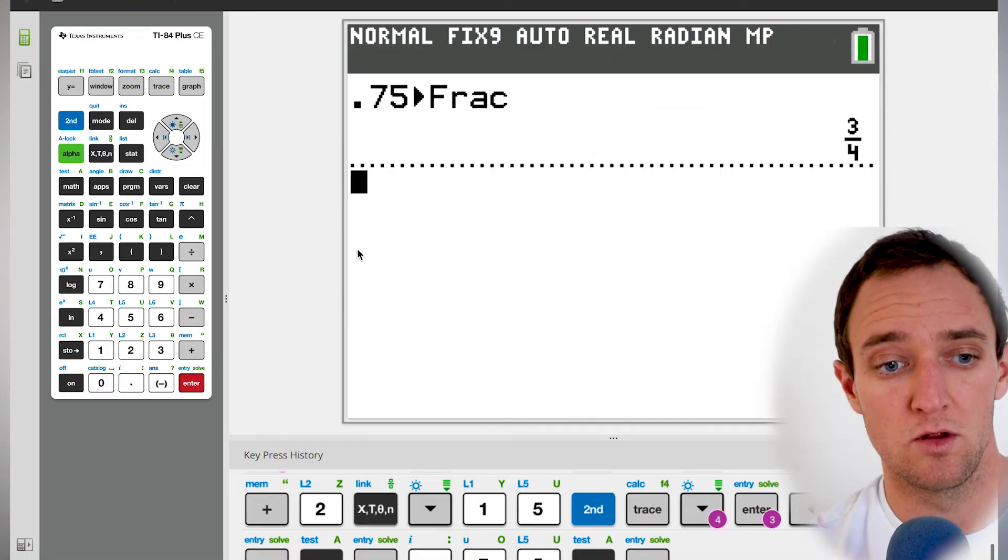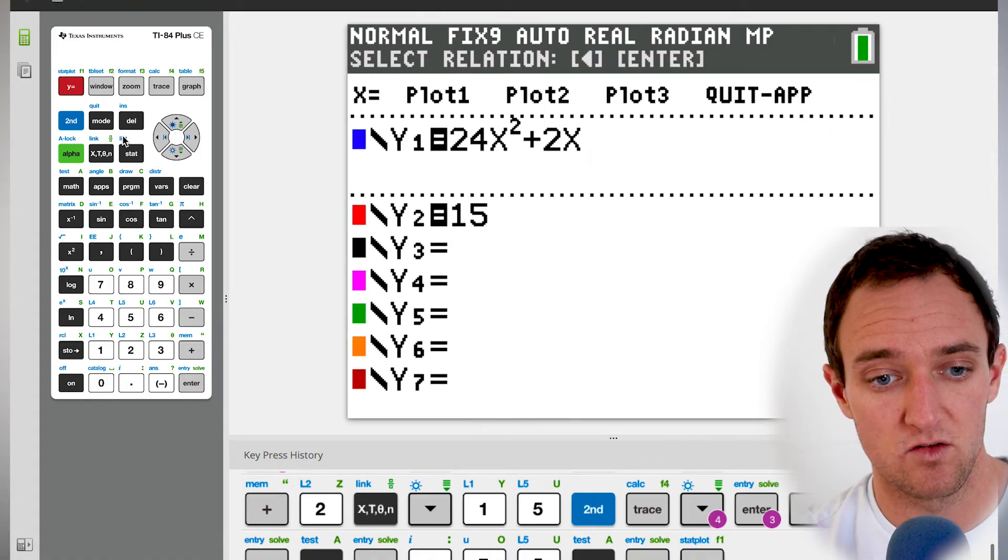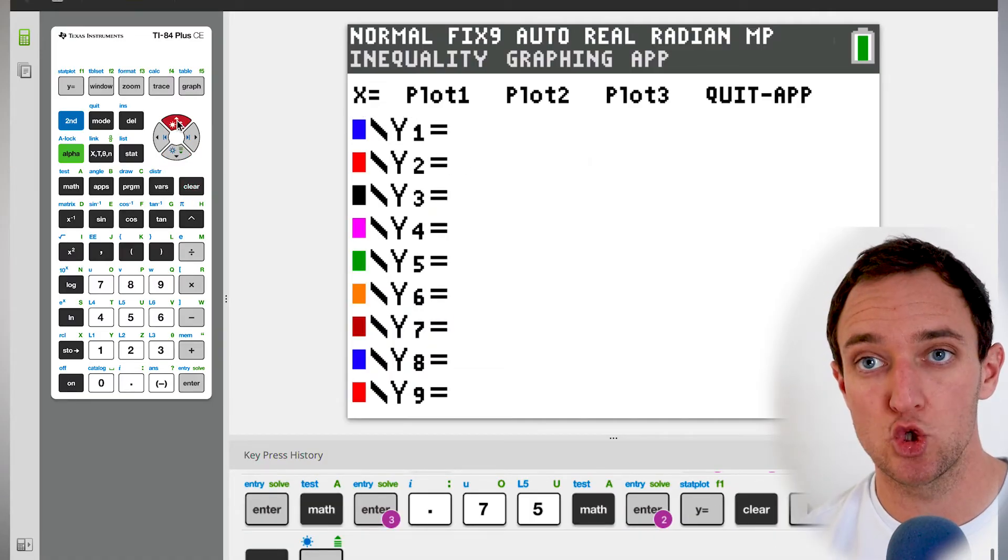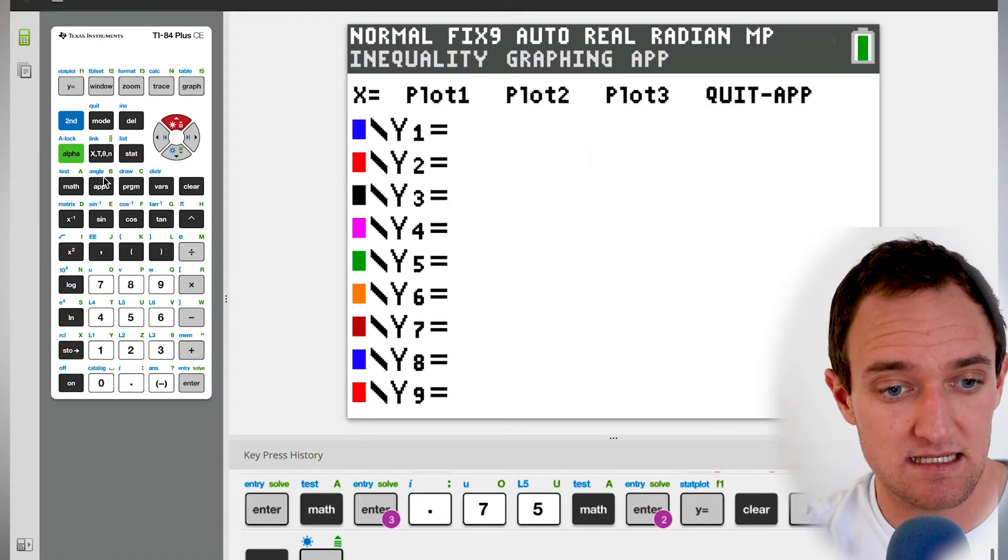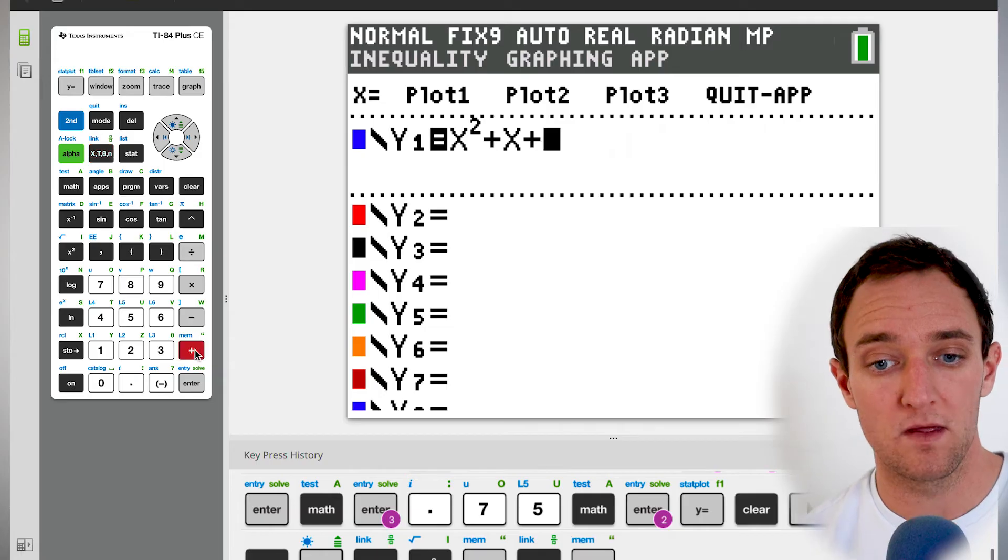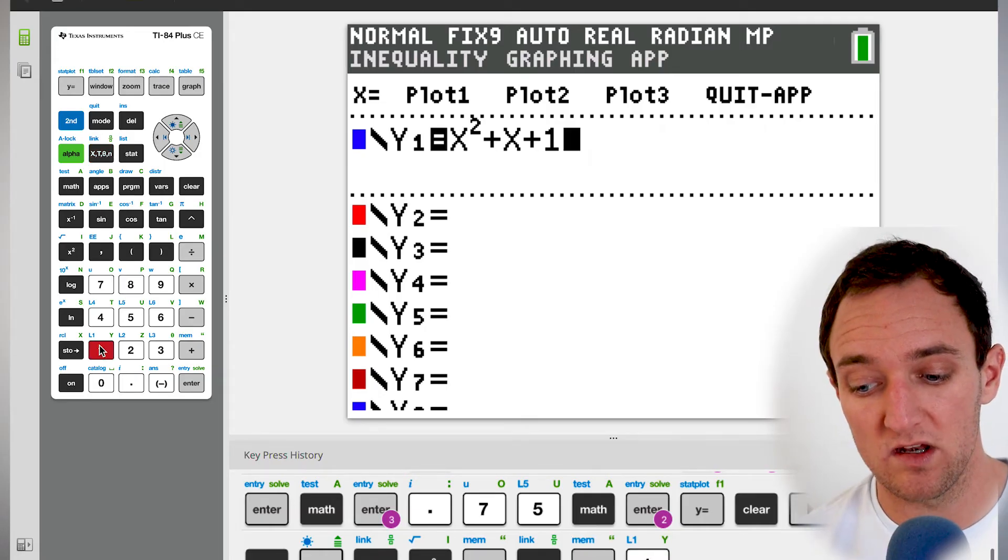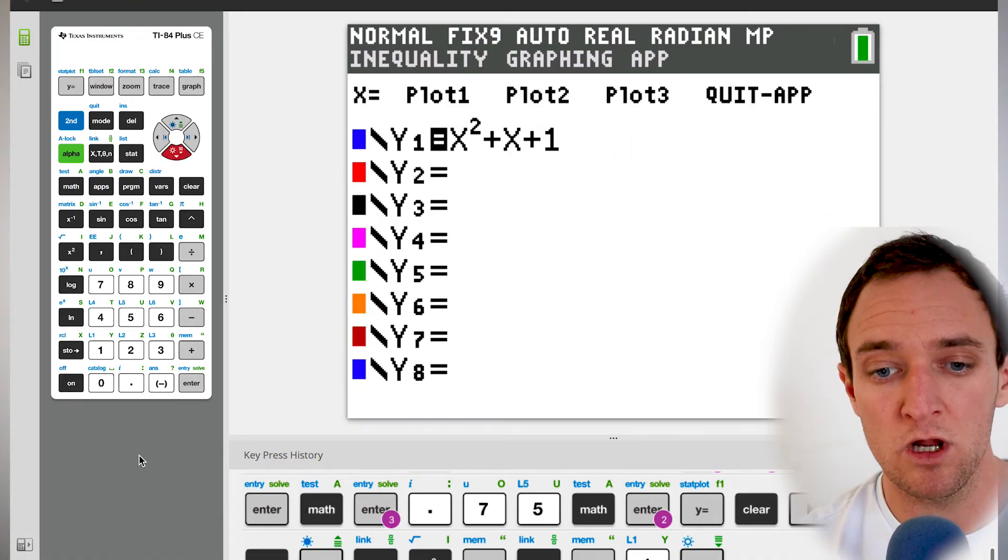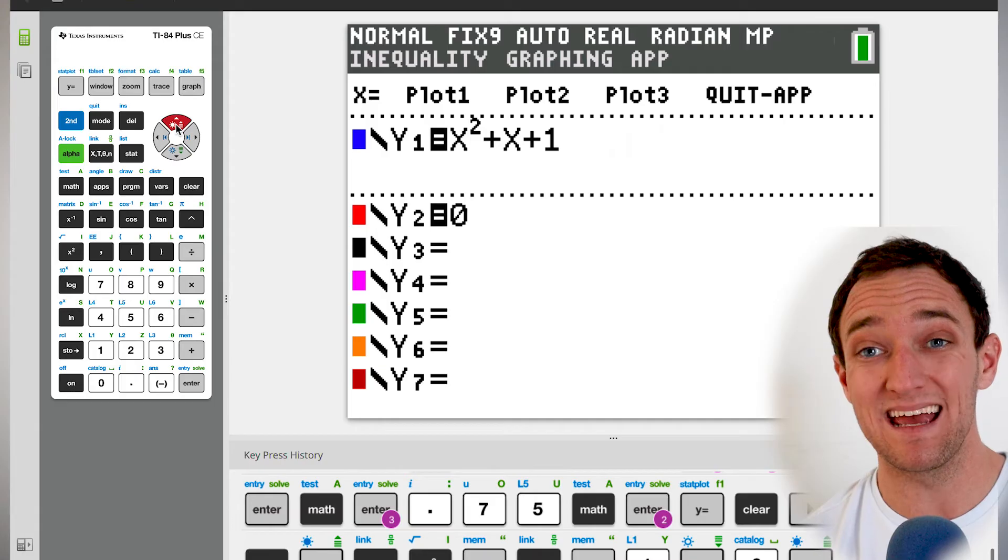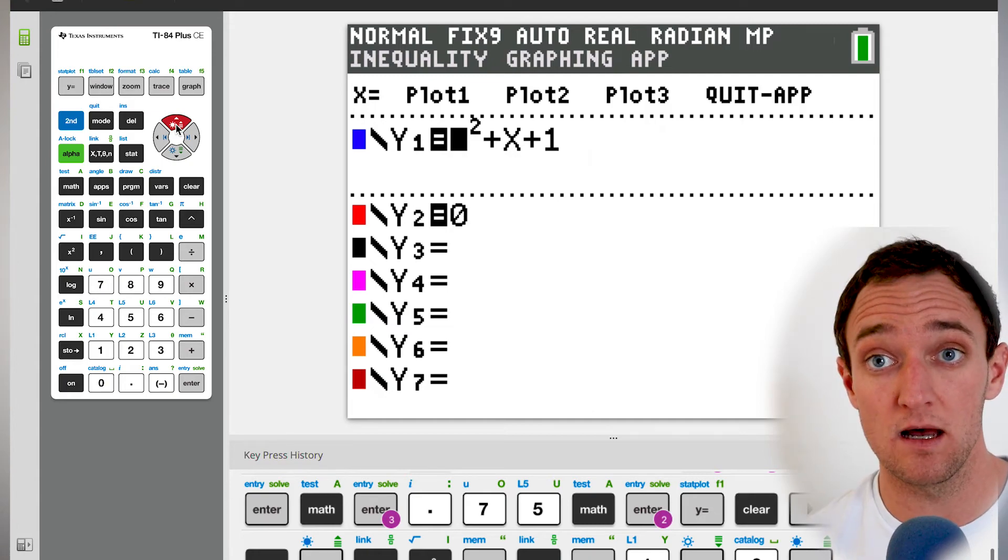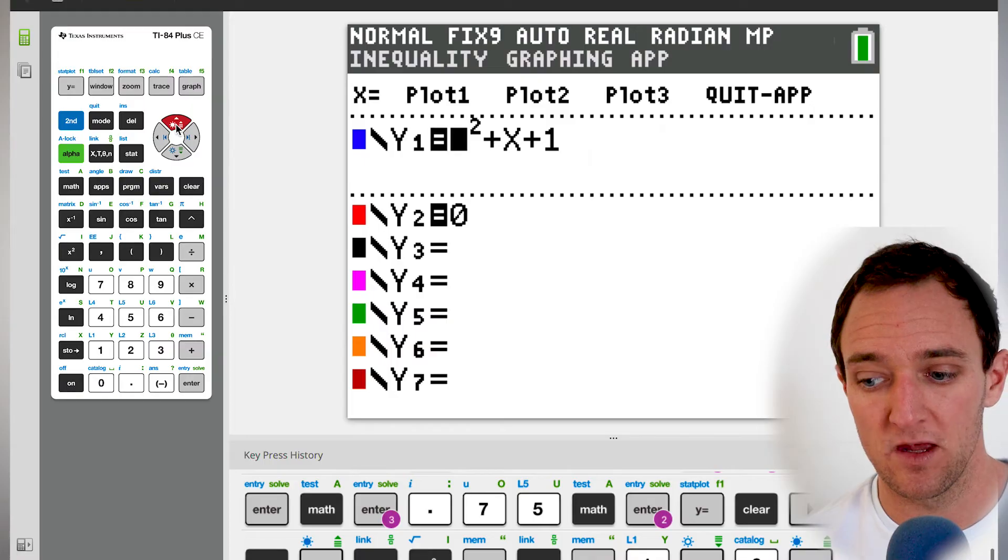So we're going to begin in the same way that we've been working on all of these. We're going to go over to the Y equals of our calculators, and we're going to clear out these old ones. We don't need these anymore. We're going to set this up in a similar way to what we did last time. So I'm going to go ahead and say X squared plus, and I'm just going to say X for now, plus one. So that's one side of our equation. And then I'm going to say for the other side of my equation here, it's just going to be zero. And I want to know in what case, for what values of B does this have no real solutions at all?